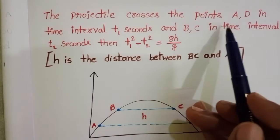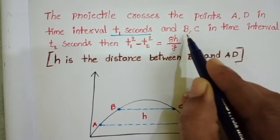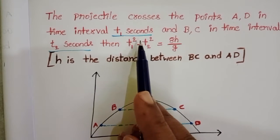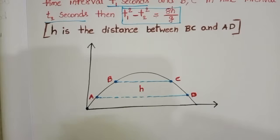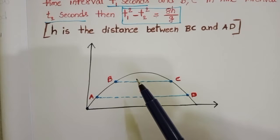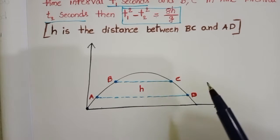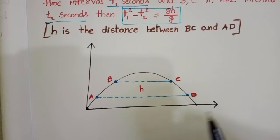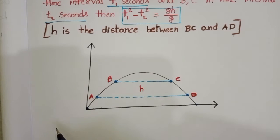The projectile crosses the points a and d in time interval t1 seconds, and b and c in time interval t2 seconds. Then t1 squared minus t2 squared equals 8h by g. When any body is projected with a certain initial velocity at angle theta with the horizontal, it strikes the ground with the same velocity. In projectile motion, our assumption is that air resistance is negligible.